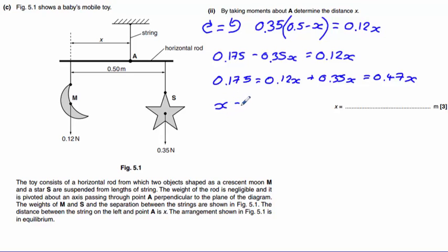So we can find x is 0.175 divided by 0.47, which equals 0.37 metres.